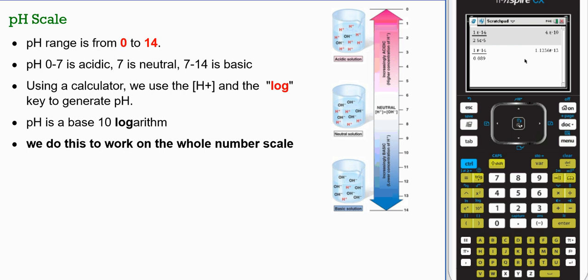So we'll talk about that calculation in a moment. pH is a base 10 logarithm, so I'll show you in the calculator where that becomes important. When we do this, it allows us to work on a whole number scale.